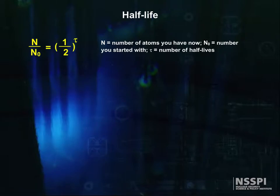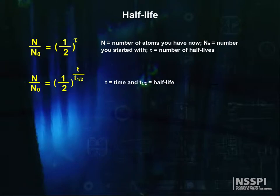Next, let's change tau to an expression that explicitly shows the number of half-lives. I have n over n0 is equal to one half to the power of t divided by t-one-half, where t is the time and t-one-half is the half-life. This is true, but it's awkward.